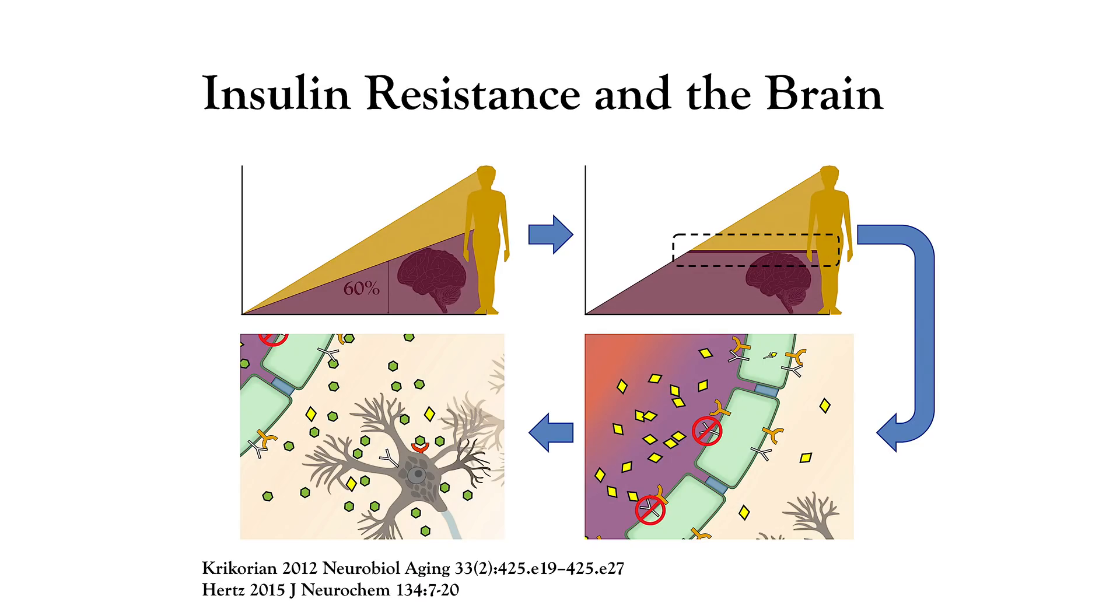And that's a problem because your cells, in particular the cells of the hippocampus, the memory center of the brain, those cells require insulin in order to process glucose. Cells can't process glucose without insulin.